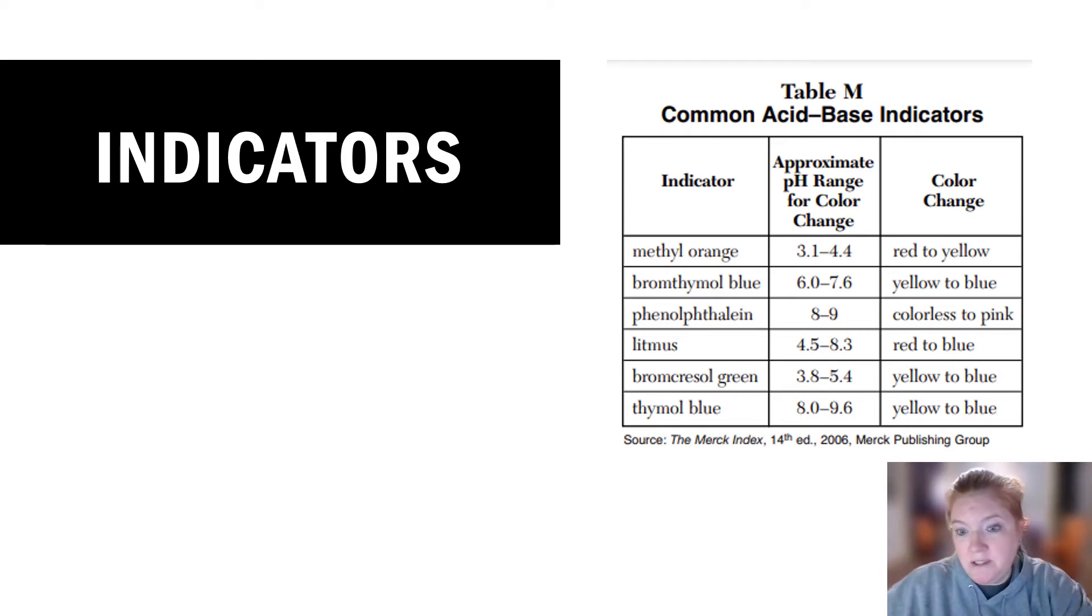So methyl orange, although it has nothing to do with orange, is red below 5.1 and then it is yellow above 4.4. Bromothymol blue is yellow below 6 and it would be blue above 7. So you kind of have to understand indicators to understand titration.